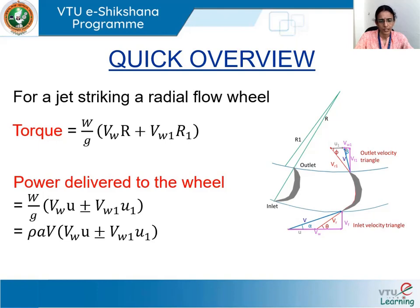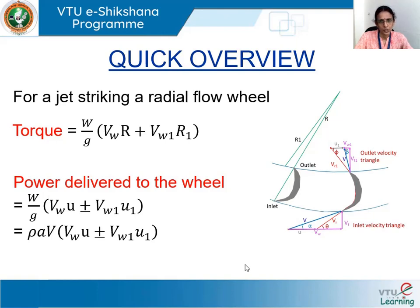Before that, let us quickly glance through what we discussed in the previous lecture. When we have a tangential jet impinging on a series of curved vanes mounted on a wheel radially, the case becomes that of a radial flow wheel. Rather than the impulsive force exerted by the jet on the wheel, we talk about the rotational tendency produced by the flowing fluid and hence the power developed.